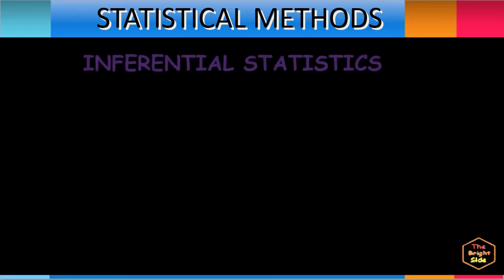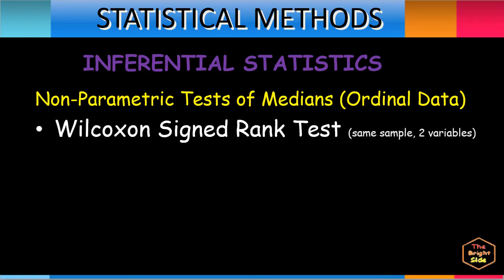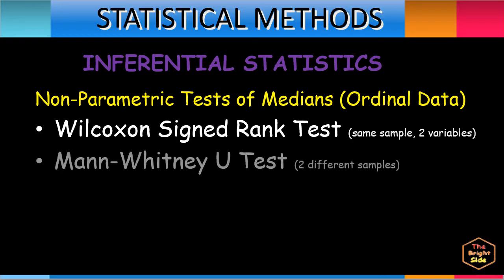Under inferential statistical methods, we have non-parametric tests of medians for ordinal data. The Wilcoxon signed-rank test is a non-parametric test used to compare two groups of matched samples. This test allows a researcher to conclude that the median of a variable from one sample is greater or lesser than another variable from the same sample. The Mann-Whitney U test is a non-parametric test used to compare two groups from independent samples, allowing a researcher to conclude that the median of a variable from one sample is greater or lesser than another variable from a different sample.